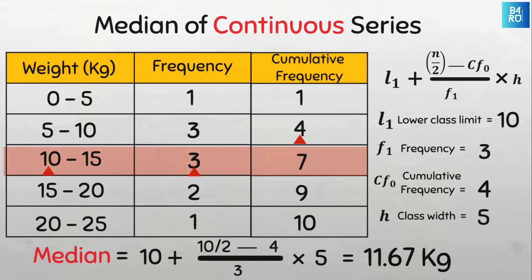And when you look at it, the median class is 10 to 15 kg, and our median of 11.67 kg falls somewhere in between this interval. So this is how to easily compute the median for individual, discrete series, and continuous series data. If you've gained value from this video, consider subscribing to this YouTube channel and sharing it with your friends and colleagues.